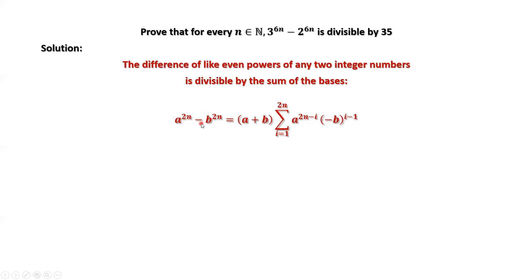If we use, you will see here, the sum of two bases is 3 plus 2, which is 5. 5 is not enough to prove this is divisible by 35.